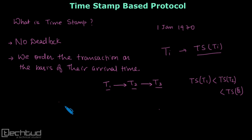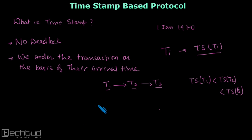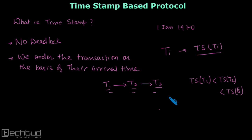The timestamp-based protocol algorithm ensures that for each data item, the conflicting operations are in an order that does not violate the serializability order. We must ensure that whatever the conflicting operation order is in the serial schedule, that order is maintained in any proposed schedule.